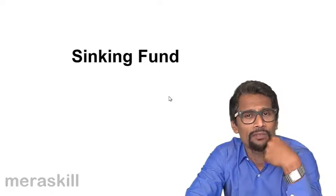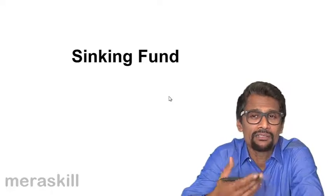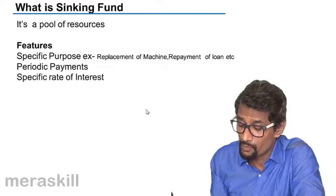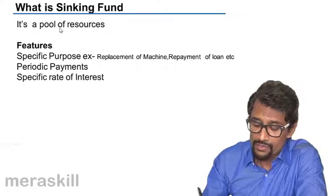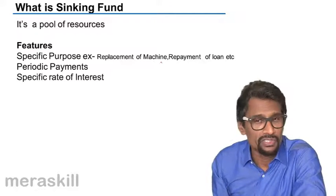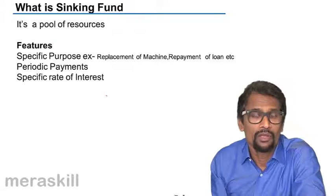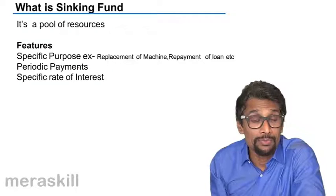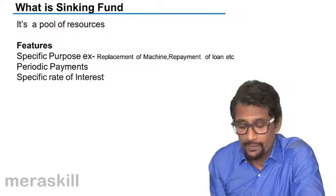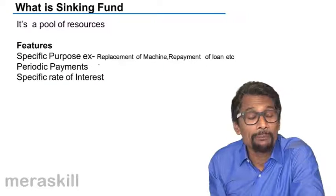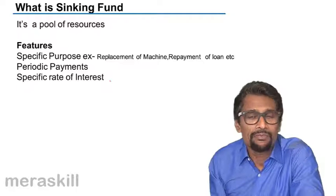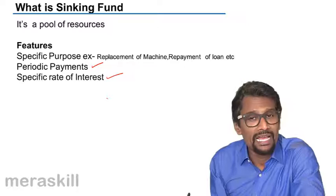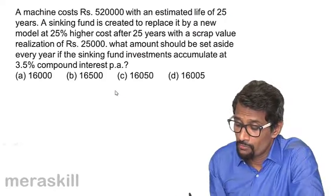A sinking fund is basically a kind of annuity, so you use the same annuity formula and modify it to suit the context. It is a pool of resources with specific features: a specific purpose — for example, replacement of a machine damaged due to wear and tear, or repayment of a loan. There are periodic payments and a specific rate of interest, making it a clear-cut case of an annuity providing for a future need.